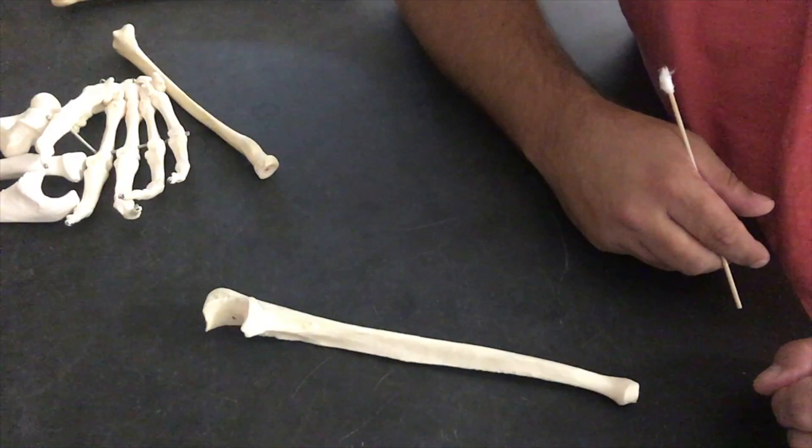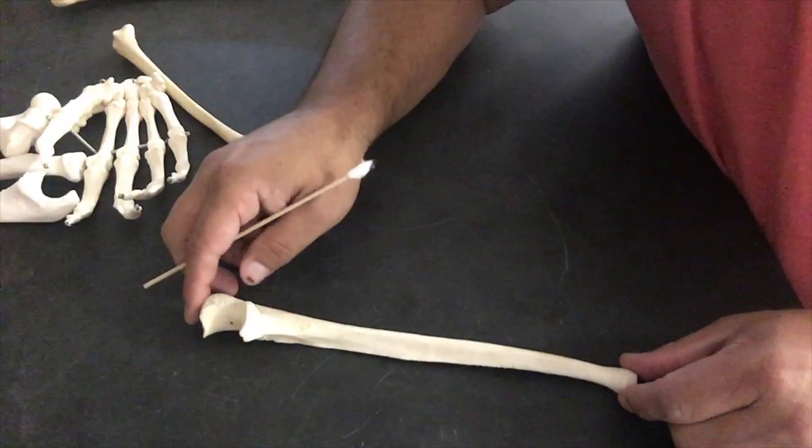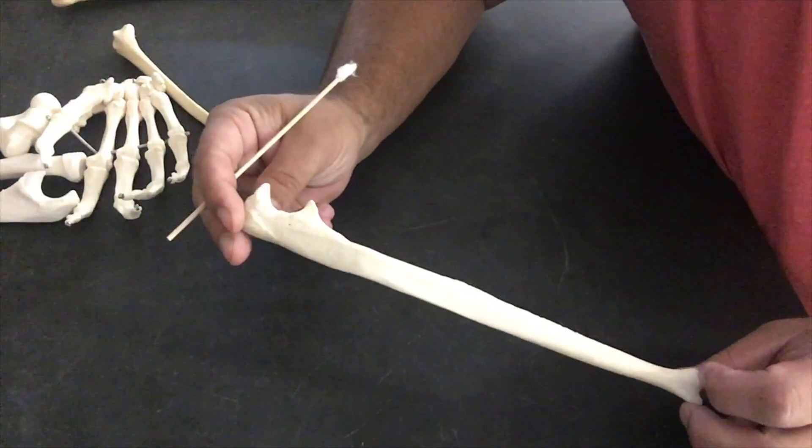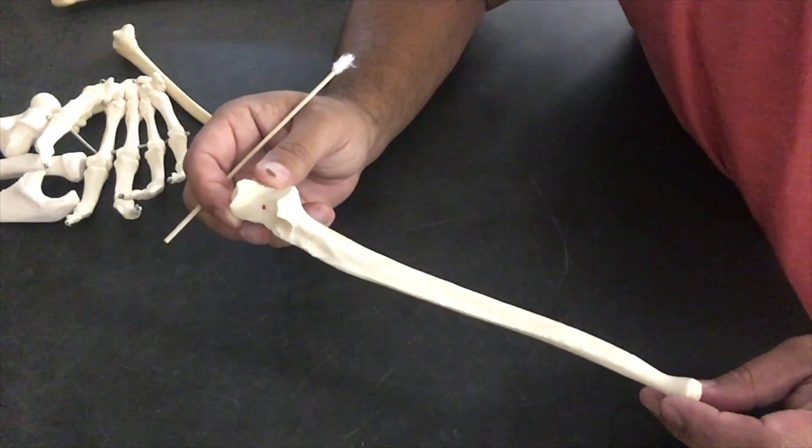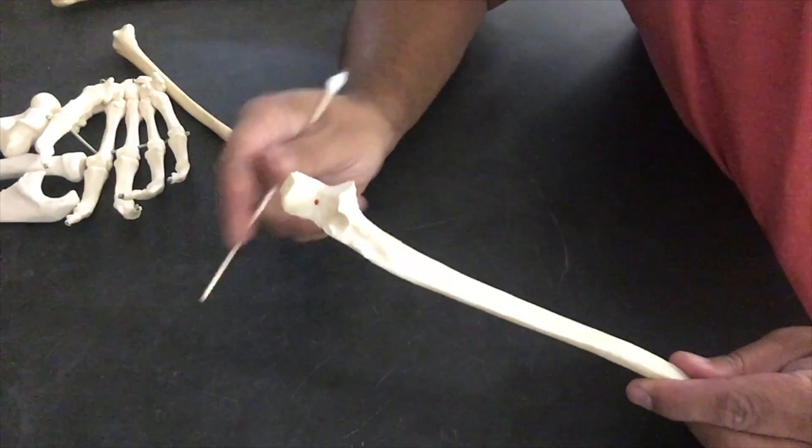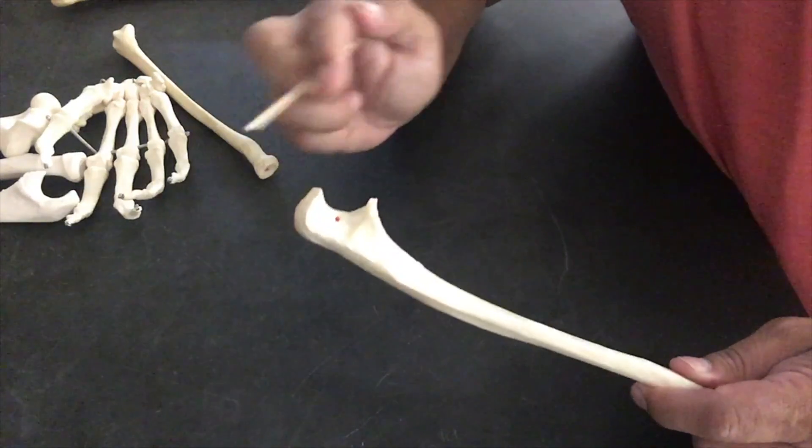Our next bone is going to be one of our two bones in the forearm. The first one we're going to look at is the ulna. The interesting thing here is we're going to see and start joining these bones and see how they work together.